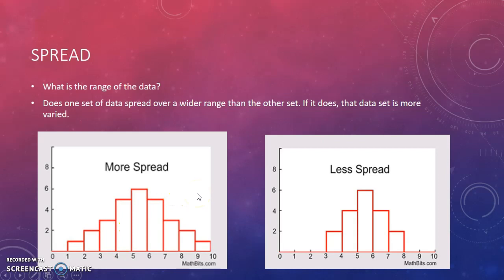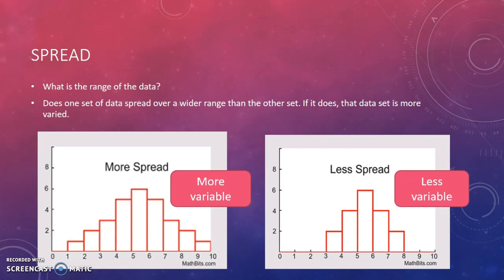What that means is that the first set of data is more variable. It's more changeable. The second set of data is less variable. And that's what spread means. How many numbers is it spread out over?